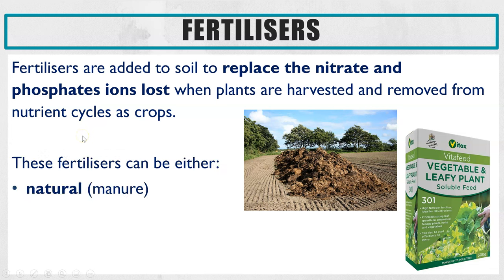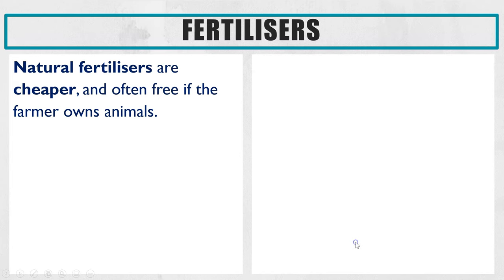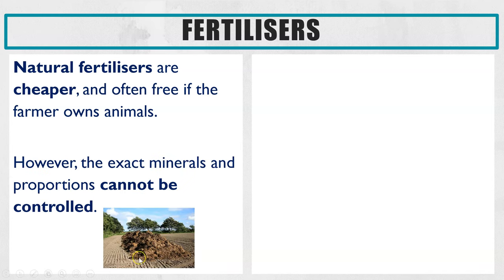There are two options: you can either use a natural fertilizer, which is animal manure, or an artificial fertilizer, which is inorganic chemicals that are synthesized. There are pros and cons to both. Natural fertilizers are much cheaper — in fact, they're free if you already own farm animals. The downside, though, is you have no control over the exact proportions of the different nutrients within the manure.